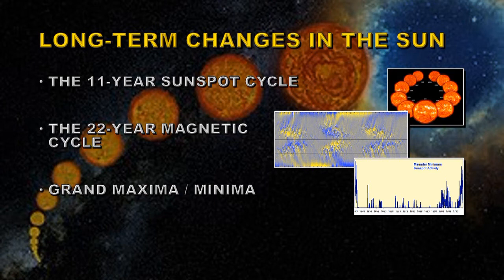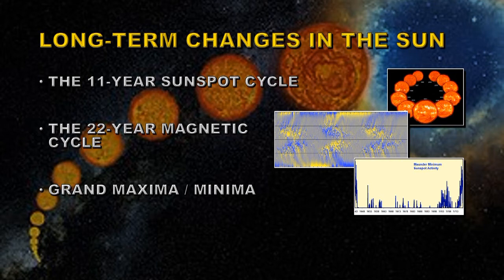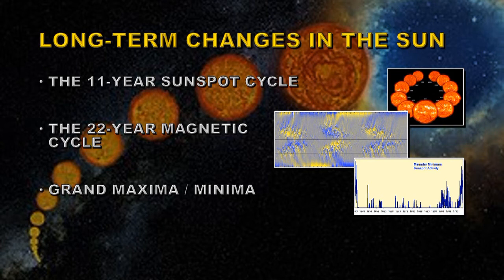You can also have grand solar maxima and grand solar minima. The prime example of a grand minimum is the Maunder Minimum, during which the number of sunspots observed was very very small, though we must be careful since there weren't that many observations. Nonetheless, there are indications this was a long period — about 70 years — without many sunspots. The Sun goes into such periods on average about every 400 years, though the interval is not constant; they've been separated by as few as 50 years or as many as a thousand years, so it's not a regular beat phenomenon.